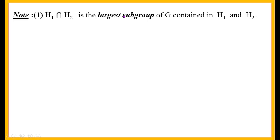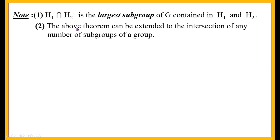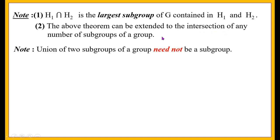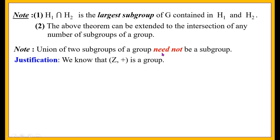Note: H1 ∩ H2 is the largest subgroup of G contained in H1 and H2. The above theorem can be extended to the intersection of any number of subgroups of a group. Now, the union of two subgroups of a group need not be a subgroup. We will justify this statement with an example.